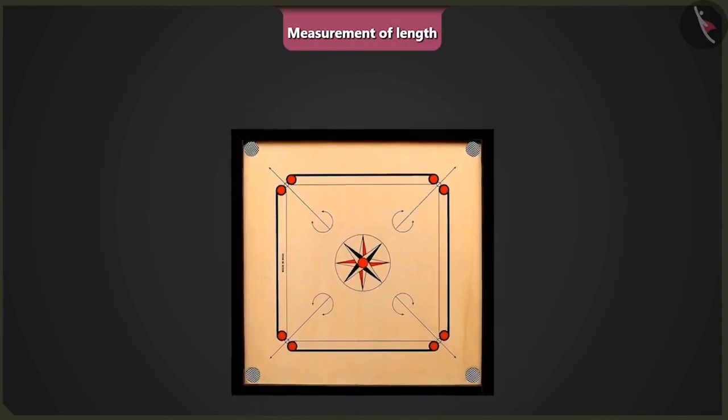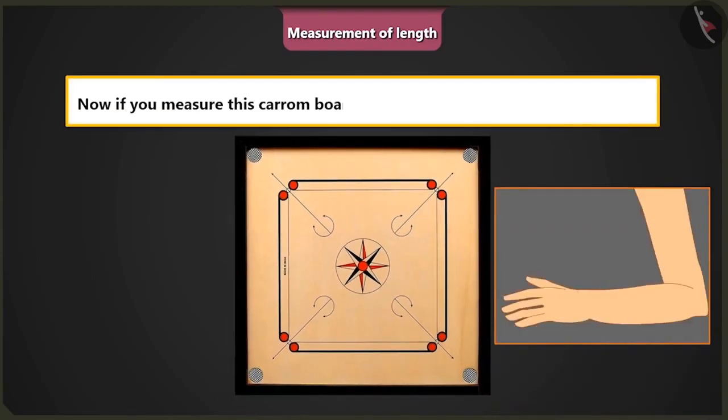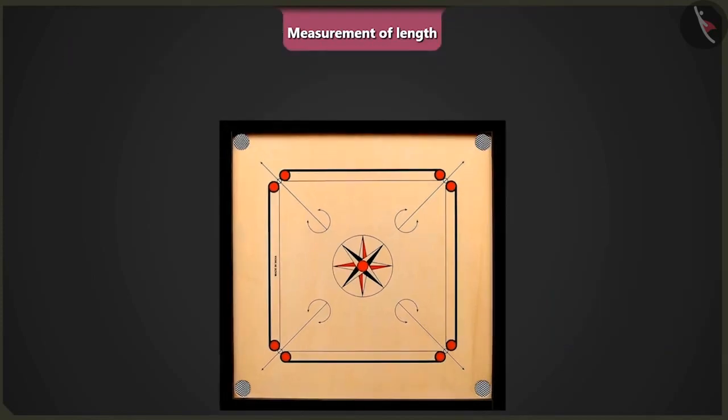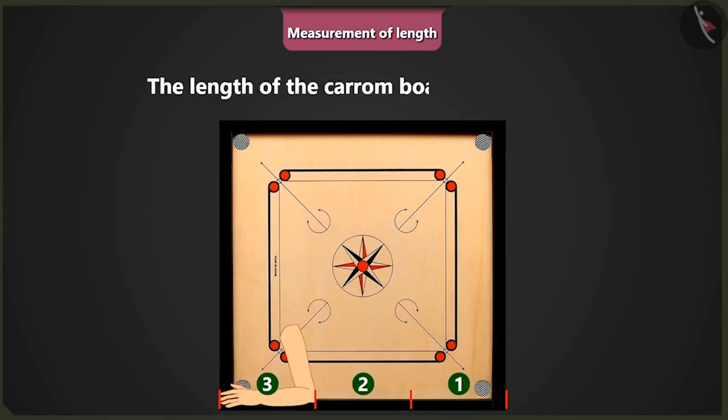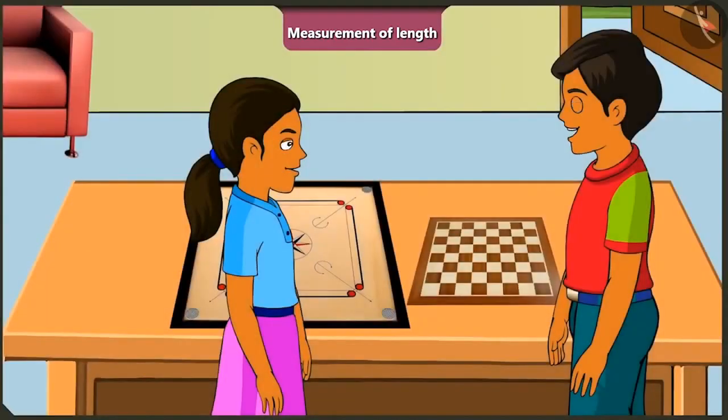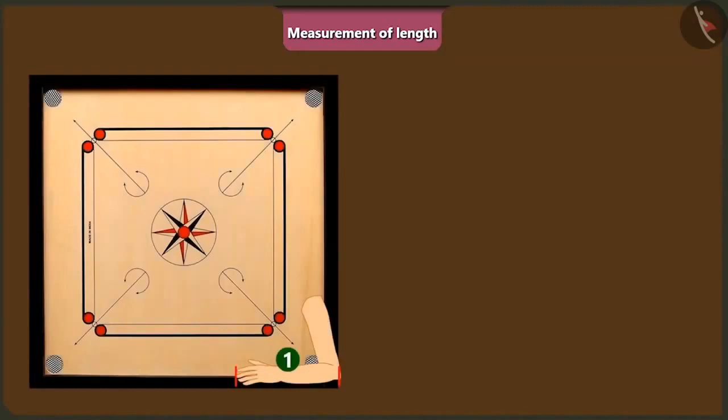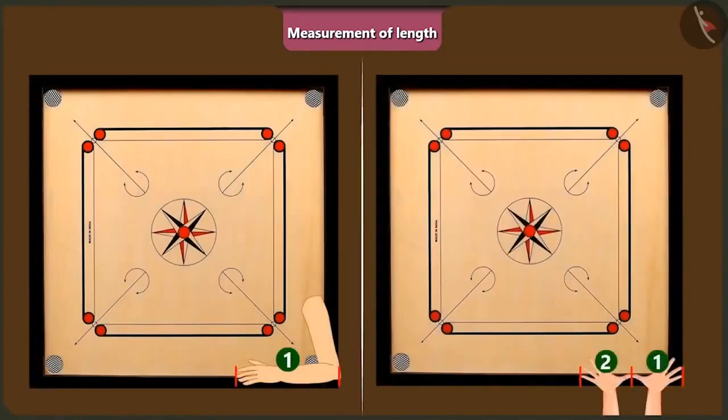Now if you measure this carom board using your arm, then what will be its length? Hmm, 1, 2 and 3. See, the length of this carom board is 3 cubit length of my arm. Absolutely correct. So we can say that the length of a cubit of your arm is equal to 2 handspans of your palm.